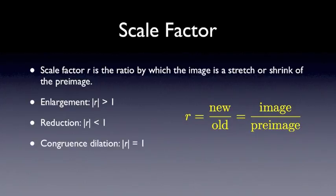It's possible for the scale factor to equal 1, and in that case you have a congruence dilation. One thing to note, it is possible to have a negative scale factor, and in that case the image changes orientation from the pre-image.